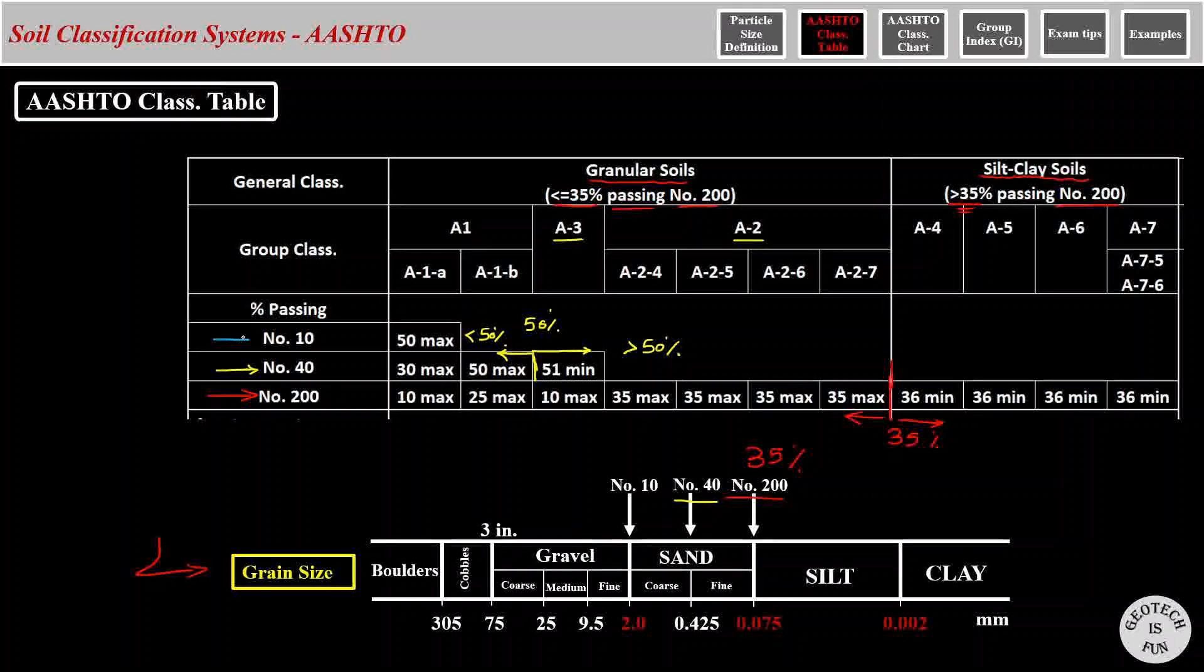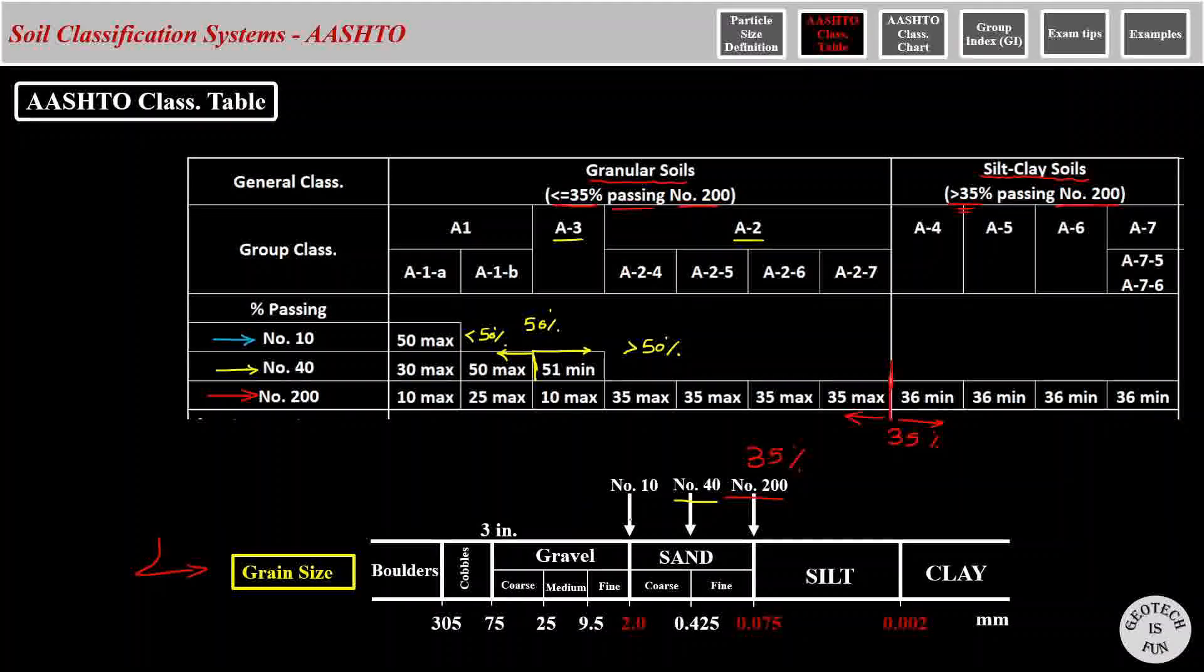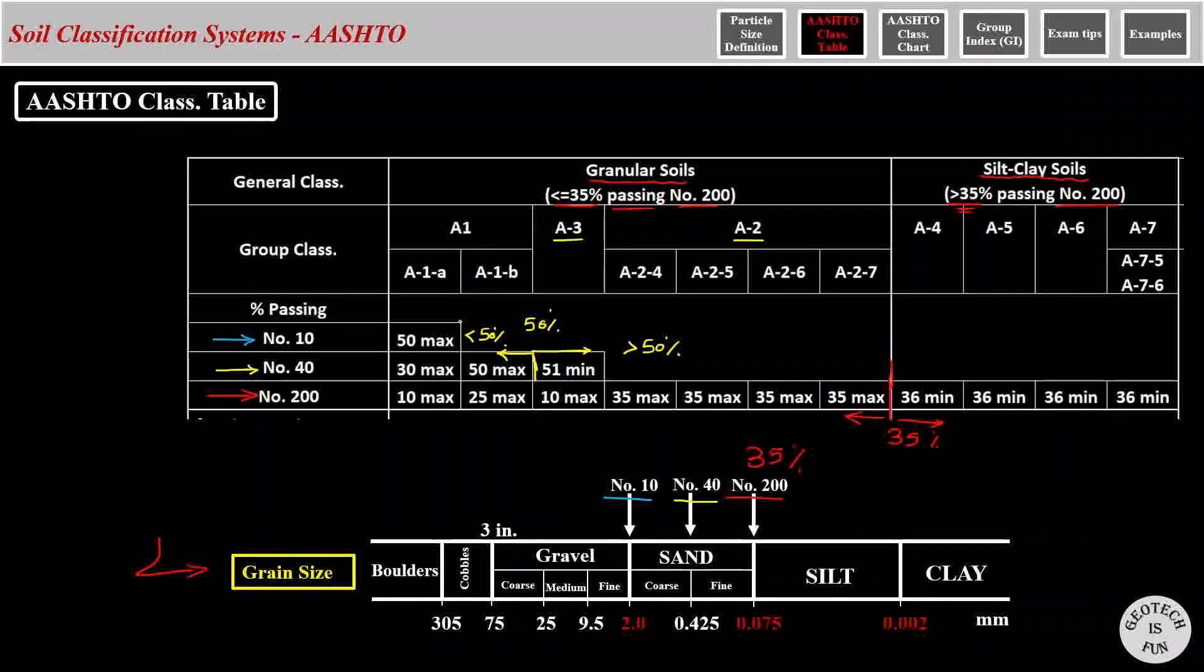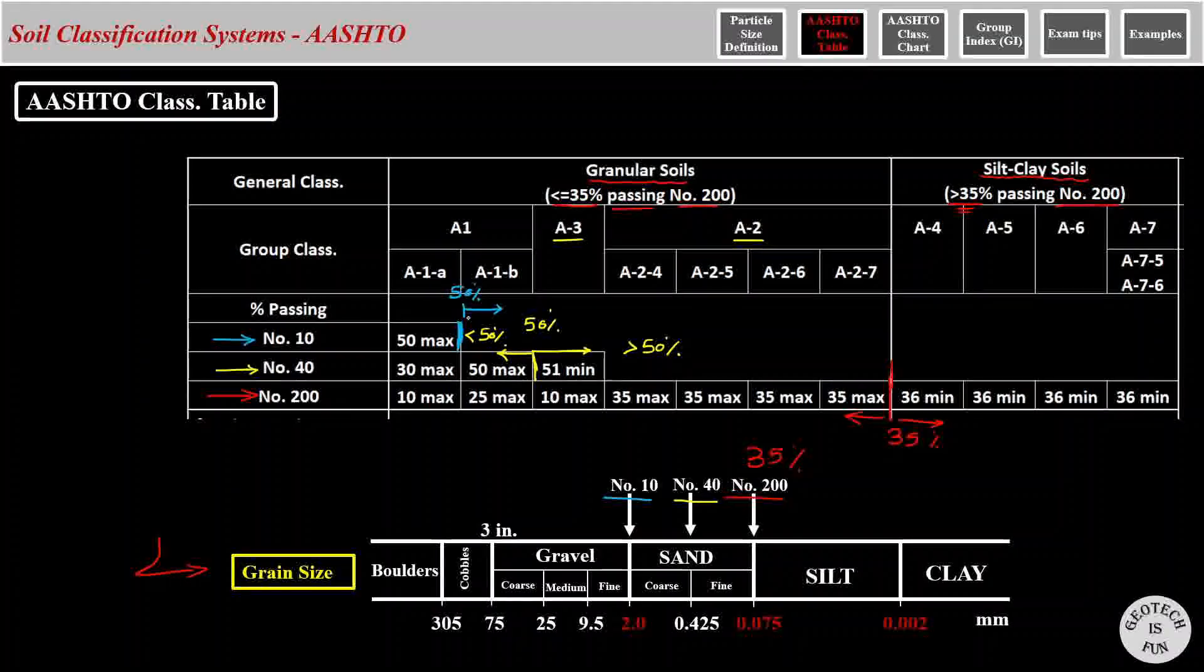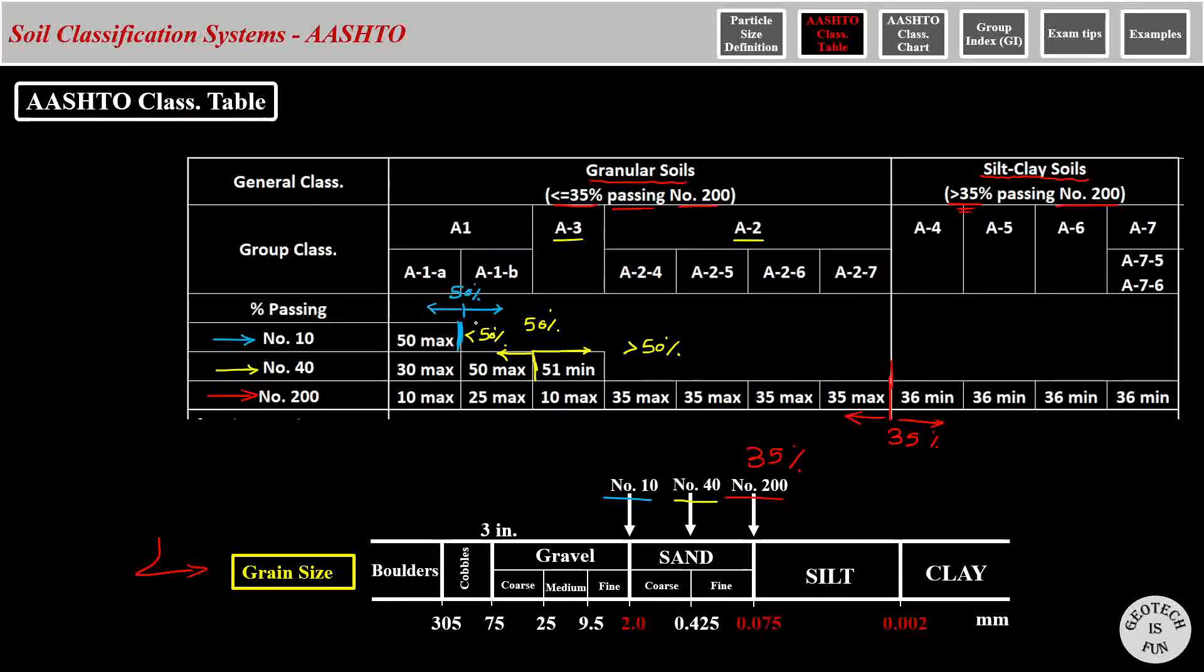And the last sieve that we have in the table is sieve number 10, which is the boundary between gravel and sand. This boundary is right here in the table, and it is again 50%. Meaning that if more than 50% of the material passes through this sieve, we have sandy soil. And if less than 50% of the material passes through this sieve, we have gravelly soil.